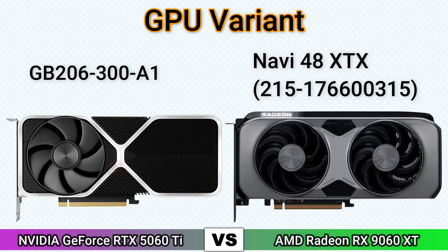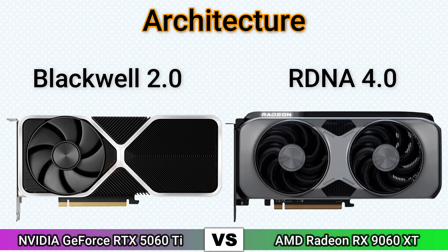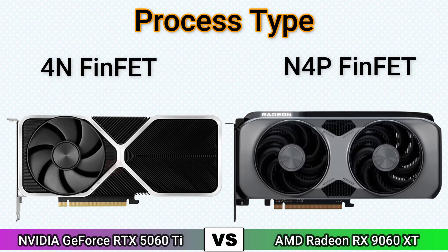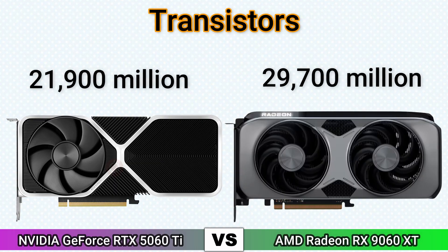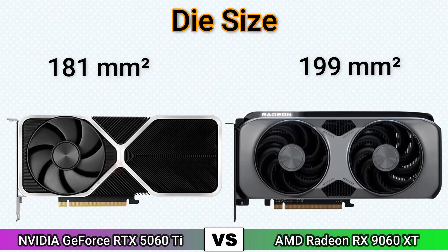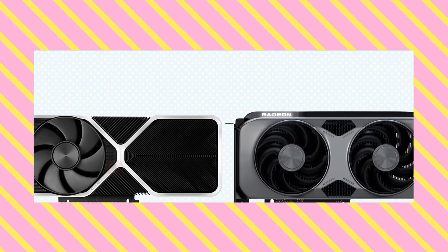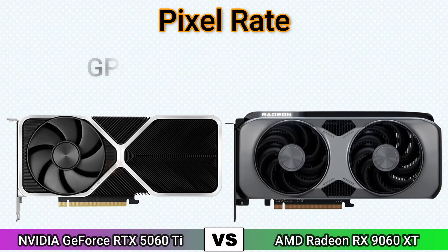GPU variant, architecture, process type, process size, transistors, density, die size, pixel rate.